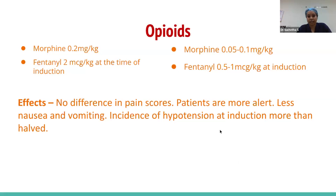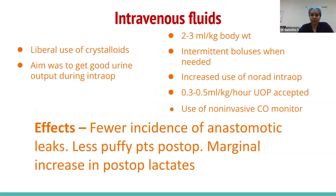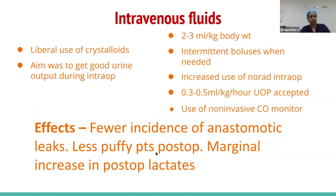The incidence of post-induction hypotension is being observed, partly due to decreased opioid use and the six-hour fasting protocol maintaining normal volemia. IV fluids: currently 2–3 ml/kg body weight as intermittent boluses when required, with increased vasopressor use intraoperatively. A urine output of even 0.3 ml/kg/hour is accepted. Non-invasive cardiac output monitoring is used. Effects seen: fewer anastomotic leaks, less edematous patients, and a marginal increase in post-operative lactates.